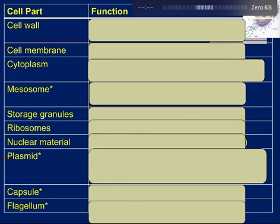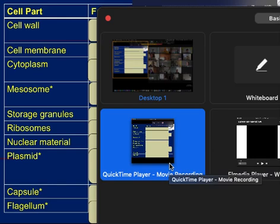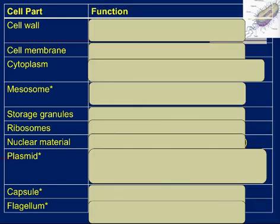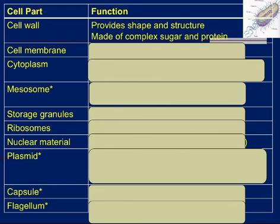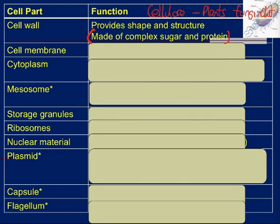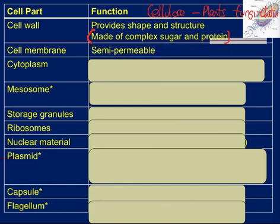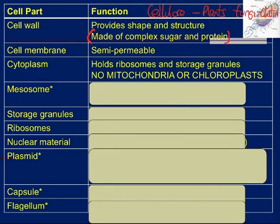Just to confirm our parts. There are only a few things that are new. The function of your cell wall is shape and structure, and it's made of complex sugar and protein. Think of plants - they're made of cellulose; fungi have chitin in their cell walls - so a different type. Your cell membrane: there are two words to describe it. It's semi-permeable - it lets some things in and other things out. The cytoplasm holds your ribosomes and storage granules, and importantly there are no organelles in there - no mitochondria or chloroplasts.